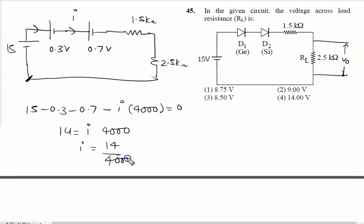Now we need to find voltage across 2.5, so V equal to I into R. I is 14 upon 4000 and R value is 2.5 kilo ohm, which is 2.5 into 1000. Cancel the zeros like this. So again we will say 14 into 2.5 divided by 4.